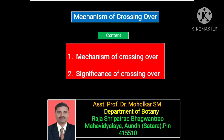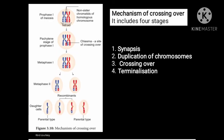Good morning. Today we will see another new concept related with crossing over — the mechanism of crossing over and the significance of crossing over. First, we will see the stages of crossing over. In the mechanism of crossing over, there are four stages: first, synapsis; second, duplication of chromosomes; third, crossing over; and last, terminalization.